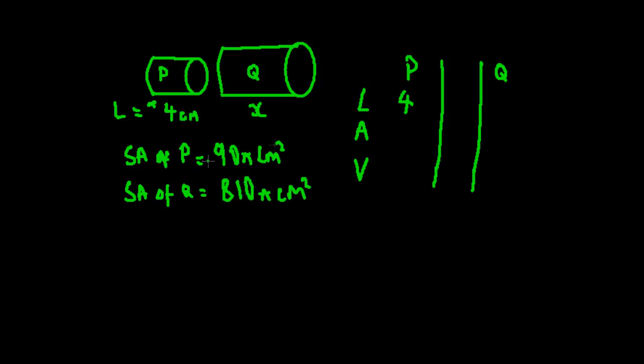The area of P is 90π cm² obviously, and the surface area of Q is 810π. That's all the information they've given us and we want to find out the length of Q. Because they're both mathematically similar, we can take this 90π and 810π and work out the multiplier in between. Simple maths: 810 divided by 90 would give us a multiplier of 9.